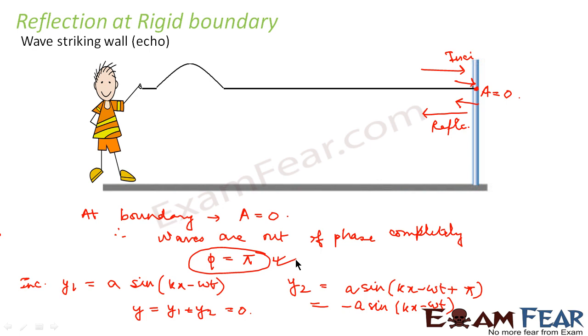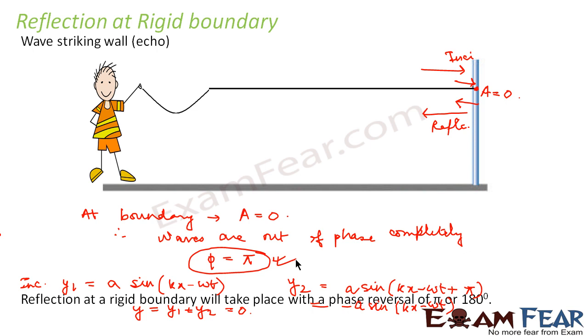So what do you conclude here? Here we conclude that on reflection at a rigid boundary, a phase reversal takes place by pi. That means the incident wave, when reaches a rigid boundary, it gets reflected and a phase reversal takes place. That is its phase gets reversed by pi. So the conclusion is reflection at a rigid boundary will take place with a phase reversal of pi or 180 degrees.